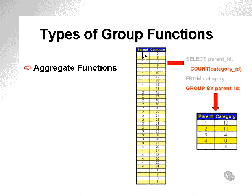If you can see the diagram on the left here, you can see there are lots of 1s, lots of 2s, some 3s, and quite a few 4s, and a few nulls at the end. When I apply this function to this category table, I get a result: parent ID 1 has 10 categories, 2 has 10, 3 has 4, 4 has 6 categories, and there are 4 null categories — categories which are parents and do not have parents themselves.